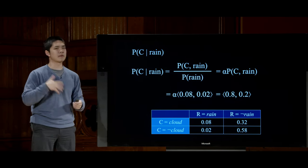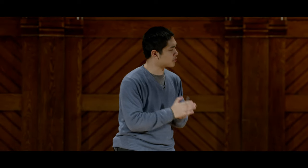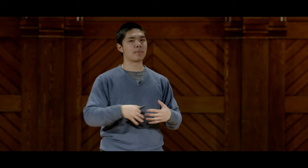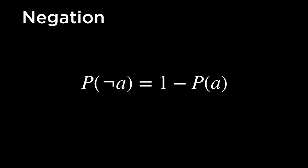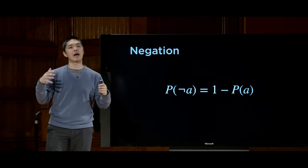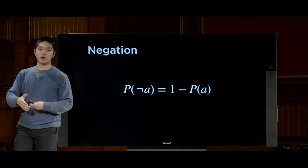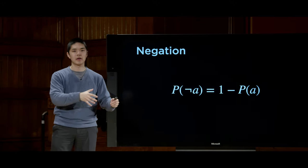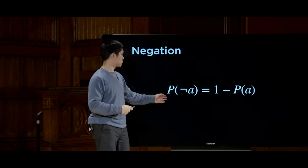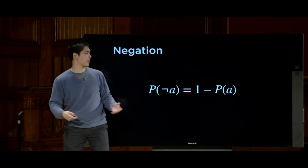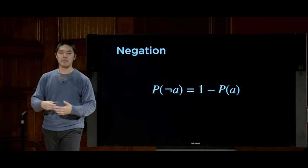There are several other important probability rules. First, the negation rule: P(not A) = 1 − P(A). This makes sense because either A happens or it doesn't, and those two cases must sum to 1. So the probability that A does not occur is simply 1 minus the probability that A does occur.